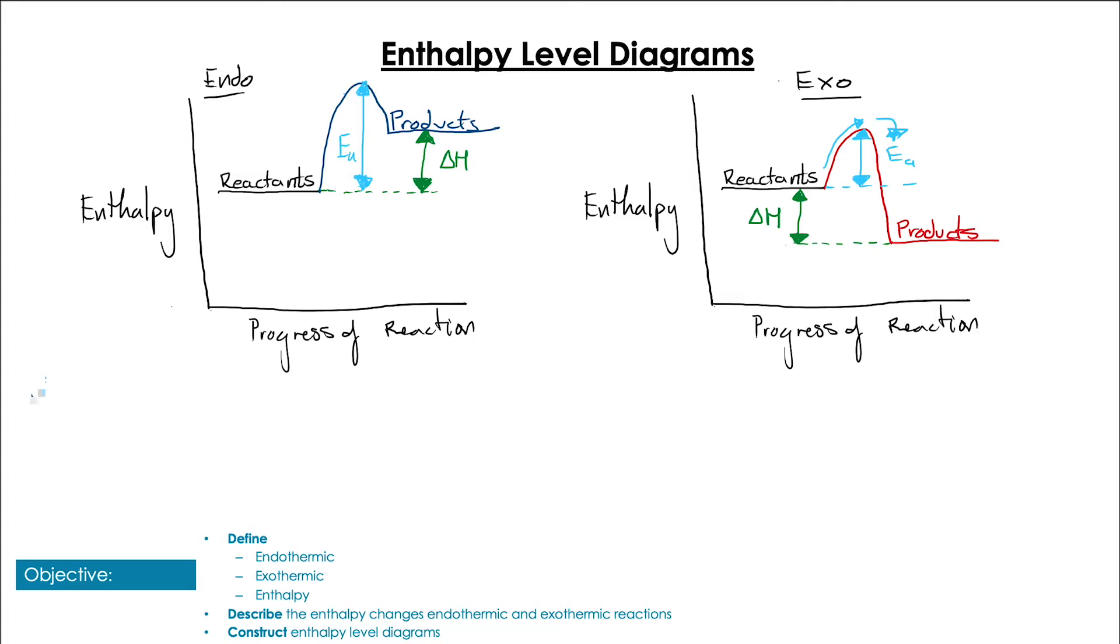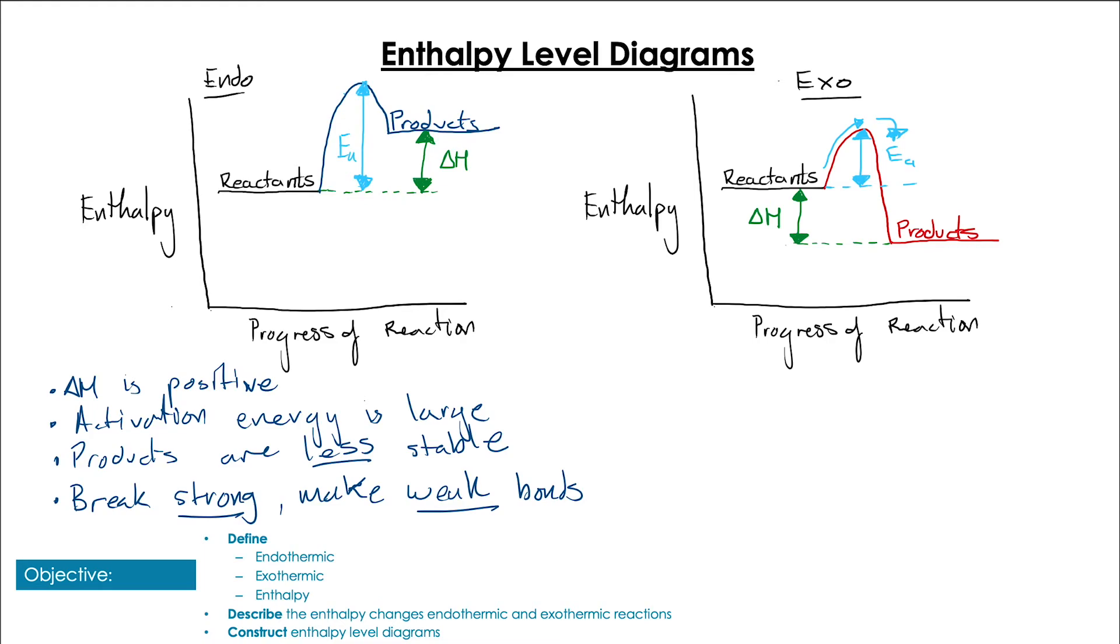To summarize then, we have endothermic reactions where delta H is positive, we have a very large value for activation energy, the products are less stable than the reactants, and we're breaking strong bonds to make weak bonds. Conversely in exothermic reactions, delta H is going to be negative, activation energy will usually be a lot smaller, products are more stable than the reactants, and we're breaking weak bonds to make strong bonds.